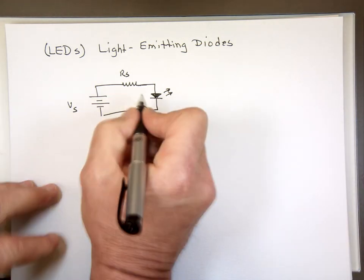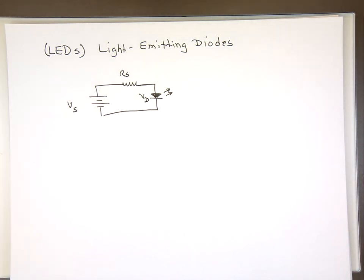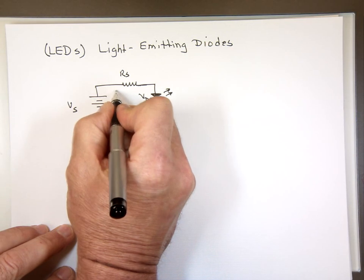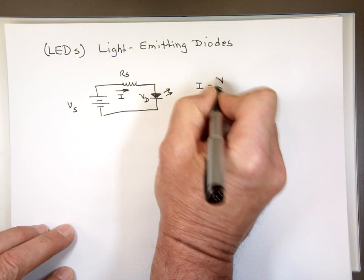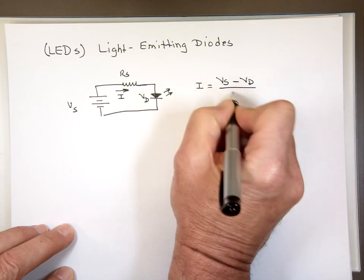And if this diode has a voltage of VD, usually about 2 volts, then we can calculate the current going through that. If you want to find the current, we can say the current equals VS minus VD divided by R sub S.